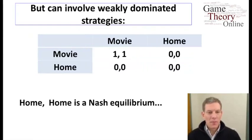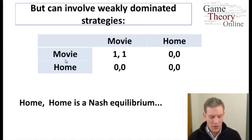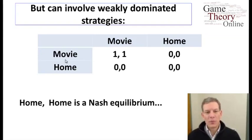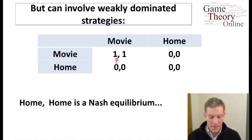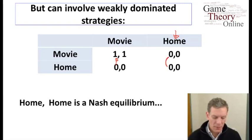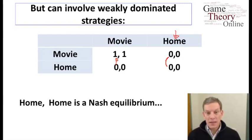Let's look at one last example — another simple coordination game. This one makes the point that it's possible to have equilibria that involve weakly dominated strategies. Looking at the payoffs: if the row player chooses between going to the movies or staying home, they'd like to go to the movies if the other player does, and would rather stay home if the other player doesn't. The payoff is one from going to the movies if the other player does, zero if staying home. But if the column player stays home, the row player is actually indifferent — they get zero from going to the movie or staying home.